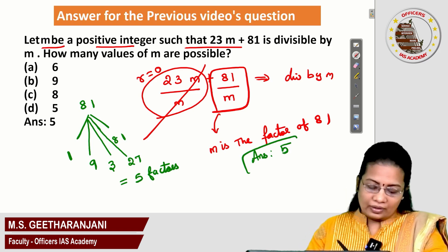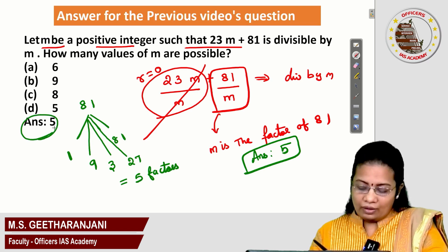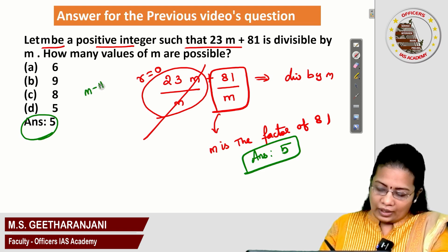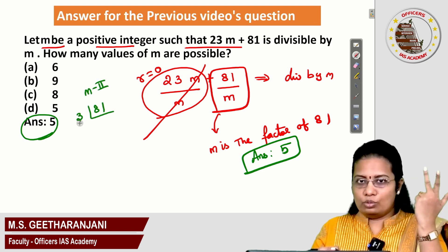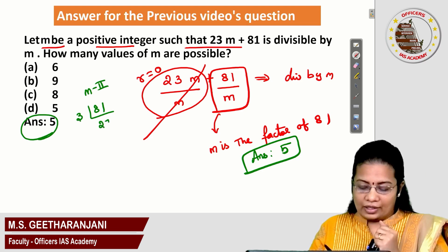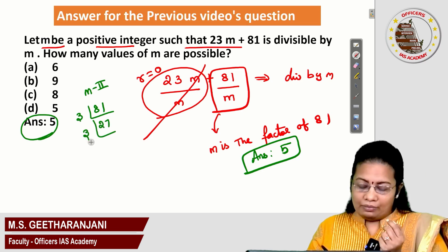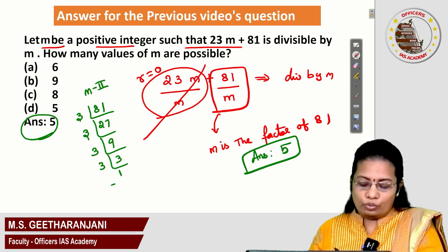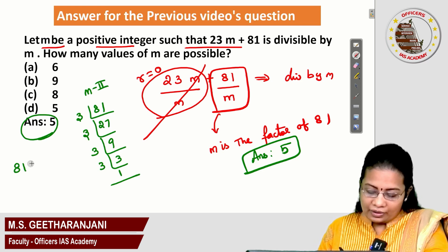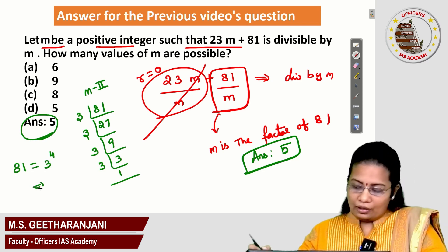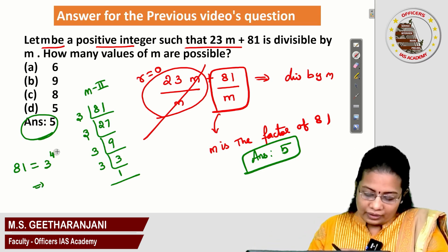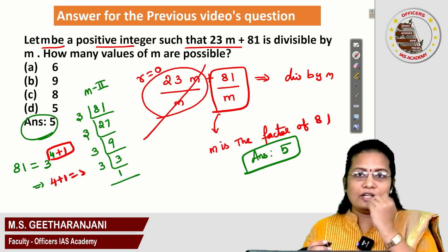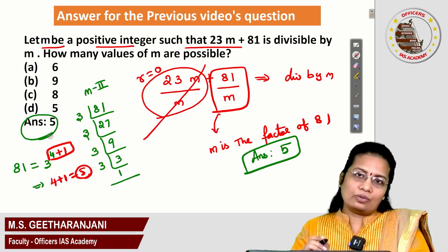Another way of finding the factors of 81 is Method 2. Take 81 and divide directly by 3, since 2 does not divide it. 3 × 27 = 81. Again divide by 3: 3 × 9 = 27. Again 3: 3 × 3 = 9. Finally, 81 = 3 to the power 4. By the factor theorem rule, add 1 to the power: 4 + 1 = 5. So 5 is the number of factors for 81.